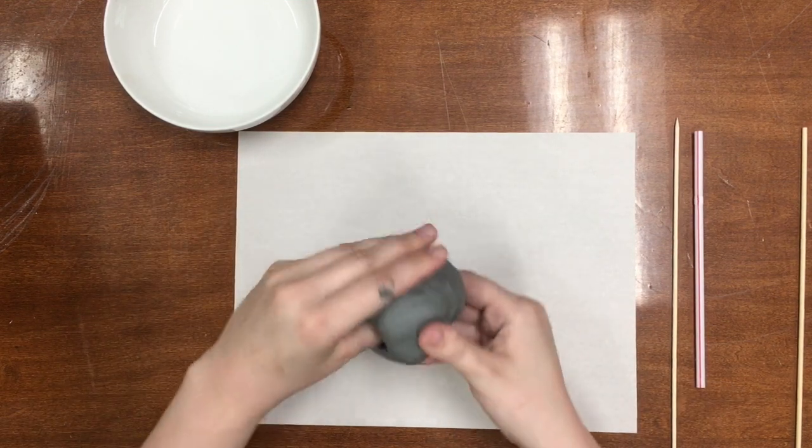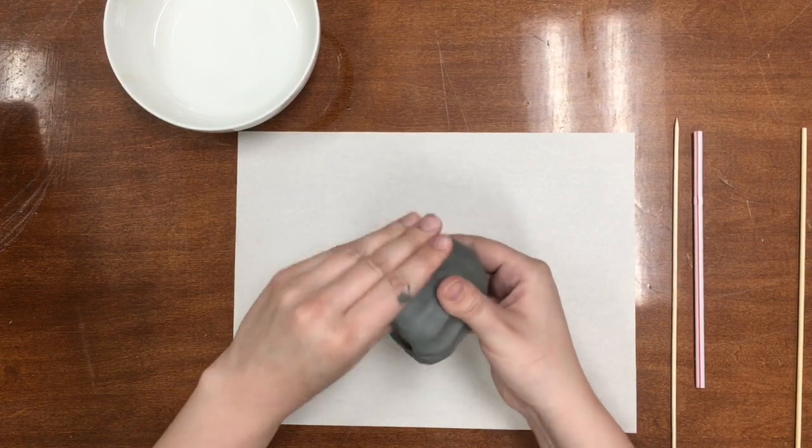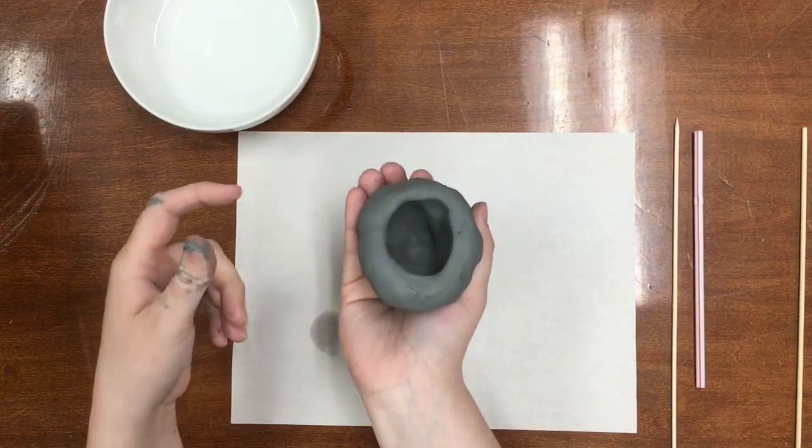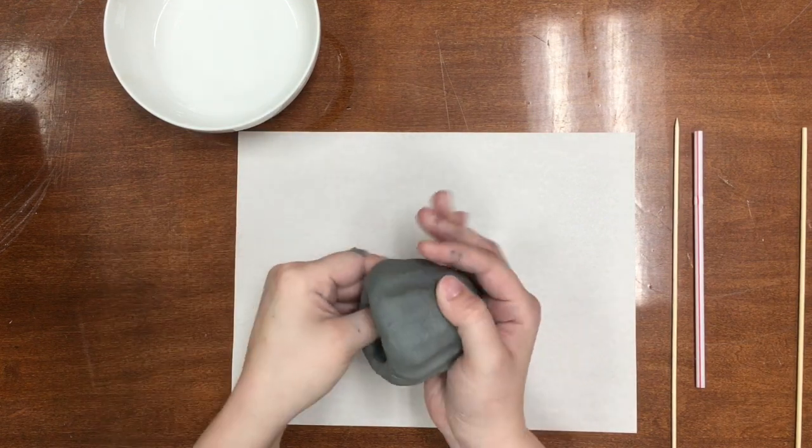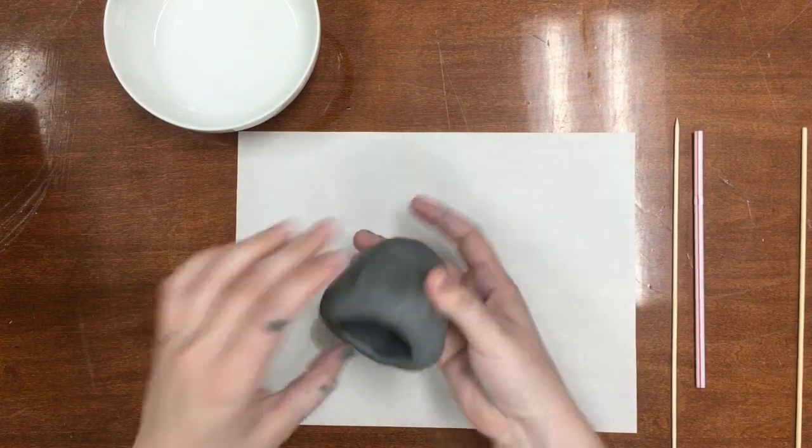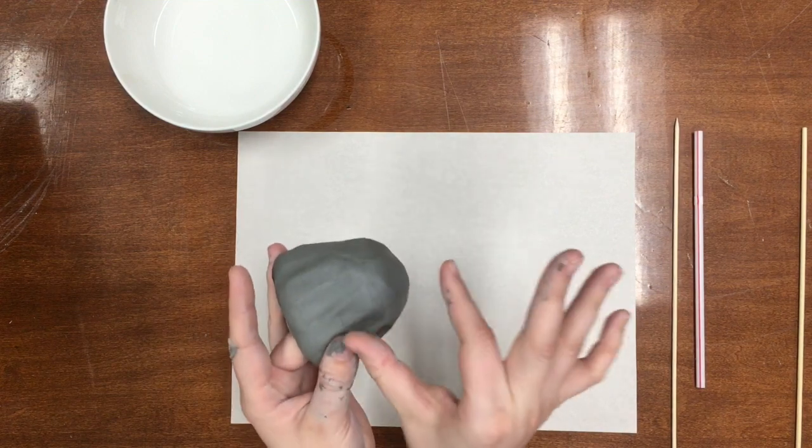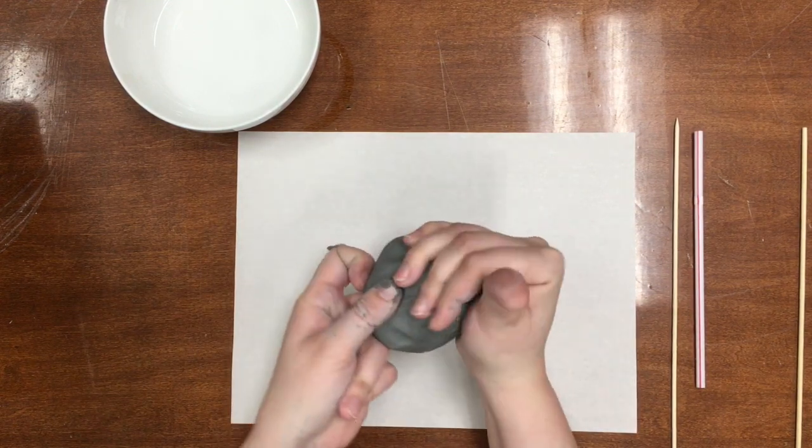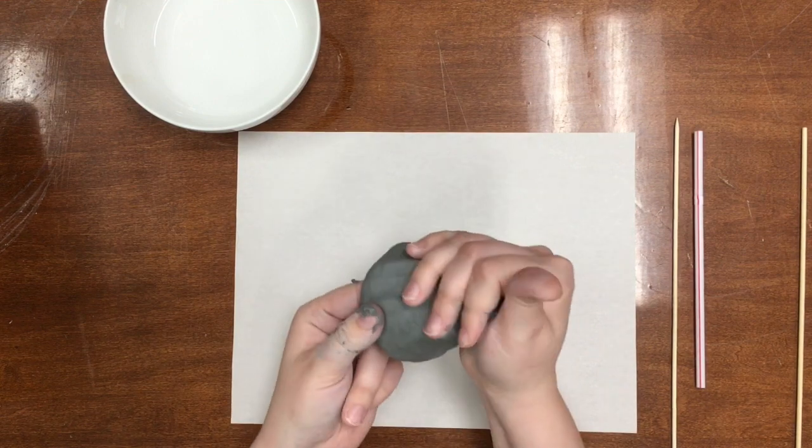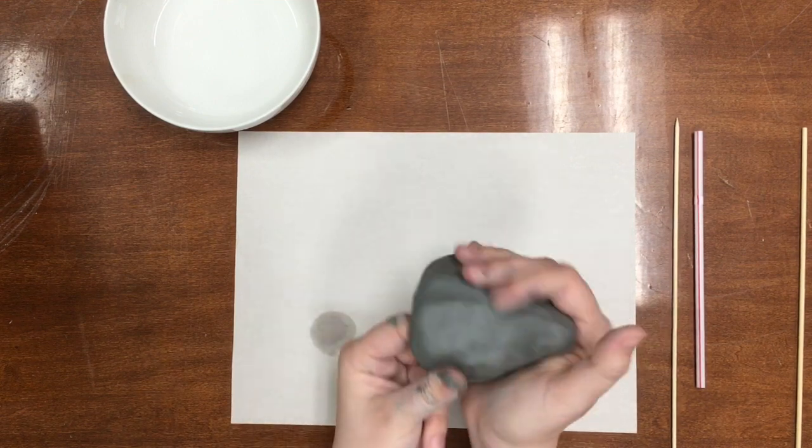We're going to start pinching the edges. The way that I pinch the edges is I pinch like a crab claw, and I just keep twisting and turning my pot and pinching. You can see there that the bottom is still a little thick, it's got a little thickness to it.